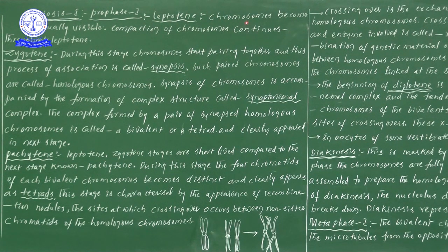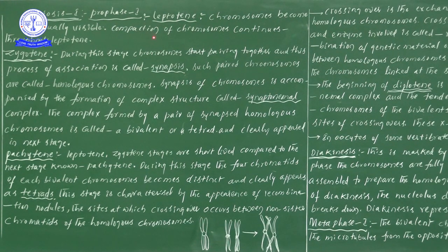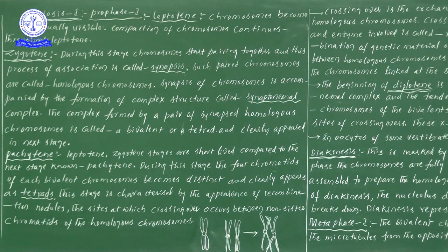Gradually these particular chromosomes become visible. For the visibility of these chromosomes, the compaction process takes place. When the compaction process of chromosomes is taking place, only then can we observe the visibility of chromosomes. That is the main important point of Leptotene.